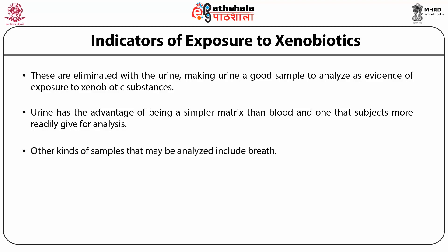Other kinds of samples that may be analyzed include breath for volatile xenobiotics and volatile metabolites, hair or nails for trace elements such as selenium, adipose tissue (fat), and milk — obviously limited to lactating females. Various kinds of organ tissues can be analyzed in cadavers, which can be useful in trying to determine cause of death by poisoning.